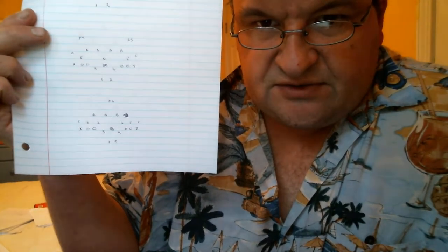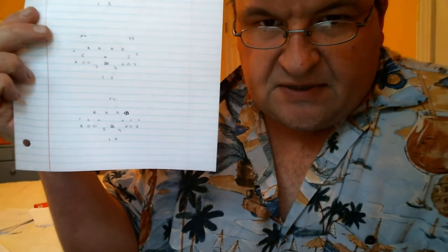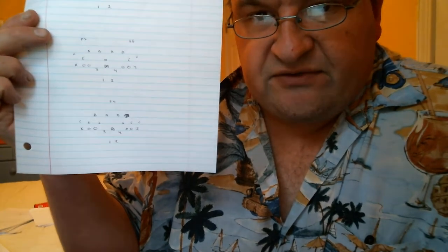Now I have two linebackers shaded over 3 and 4. Strong safety is shaded in between defensive tackle and defensive end. And the backside linebacker is shaded in between the end and defensive tackle. Free safety is deep.